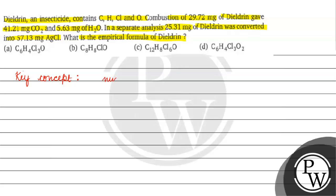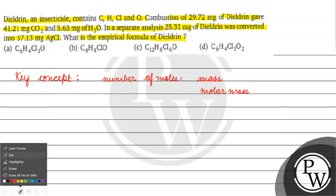The key concept for this question is that number of moles equals mass divided by molar mass. Let's work through it.